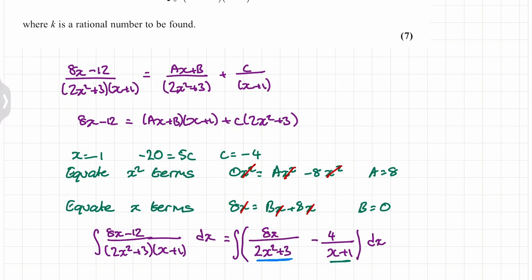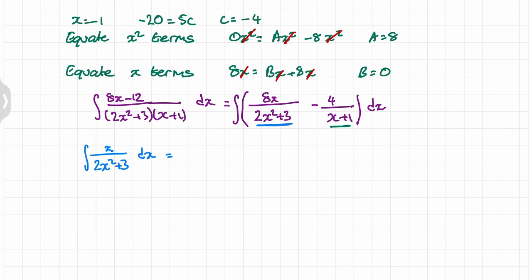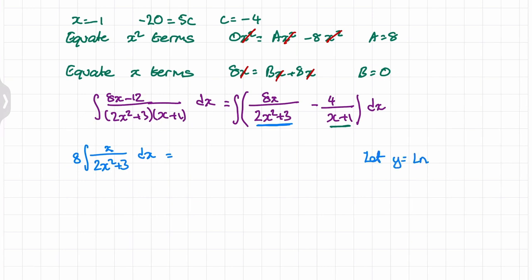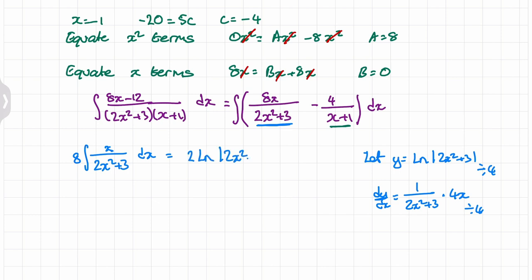For the first fraction, we can use the reverse chain rule, because when you differentiate 2x² + 3 you get the x term in the numerator. We bring the 8 out in front. Letting y = ln(2x² + 3), differentiating gives dy/dx = (4x)/(2x² + 3). Dividing by 4 scales this to match our integrand, turning the 8 into a 2. So this integrates to 2·ln(2x² + 3), which we write as ln((2x² + 3)²).